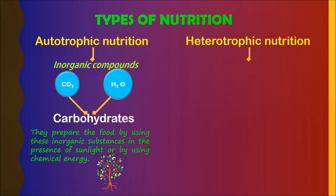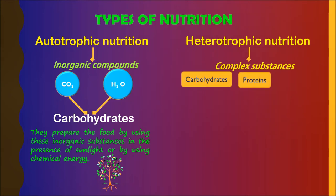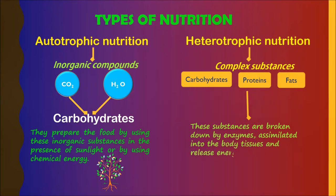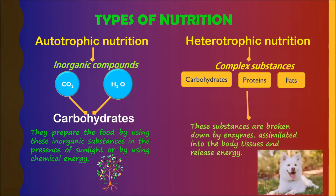In heterotrophic nutrition, complex substances are taken in such as carbohydrates, proteins and fats. These substances are broken down by enzymes, assimilated into the body tissues, and release energy. The examples are animals. The heterotrophs depend on autotrophs.